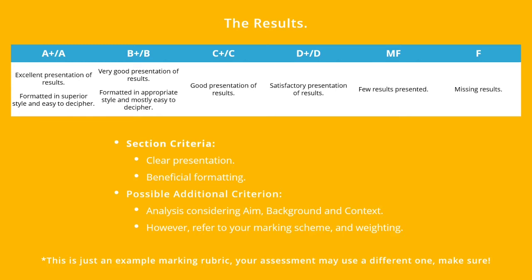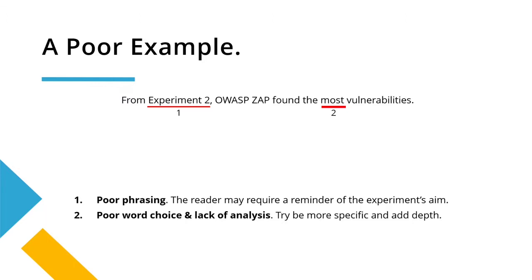However, for the most part we're going to focus here on when results are worth less than 10 percent. The results section can be quite diverse, so I've stuck to common examples across the greatest number of reports I've come across. For these exemplars I've used imaginary experiments looking at comparing vulnerability scanners.